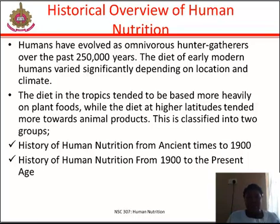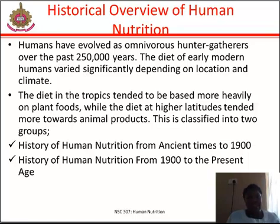Agriculture developed about 10,000 years ago in multiple locations throughout the world, providing grains such as wheat, rice, maize, and potatoes, with staples such as bread and pasta. Farming also provided milk and dairy products and sharply increased the availability of meat and the diversity of vegetables. The importance of food purity was recognized when bulk storage led to infestation and contamination risk. Cooking developed as a ritual activity due to efficiency and reliability, also serving as a response to demands for food purity and consistency.